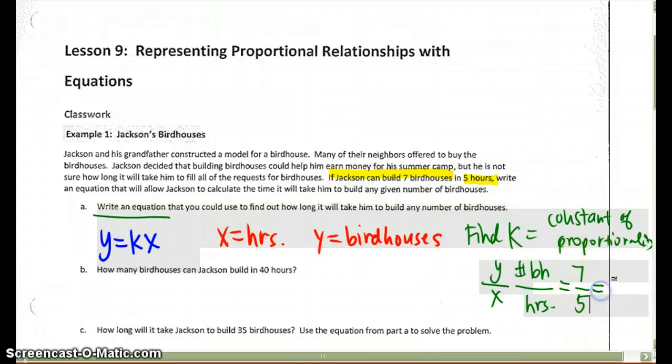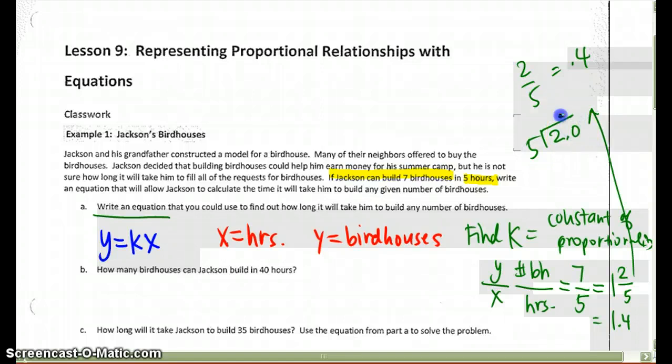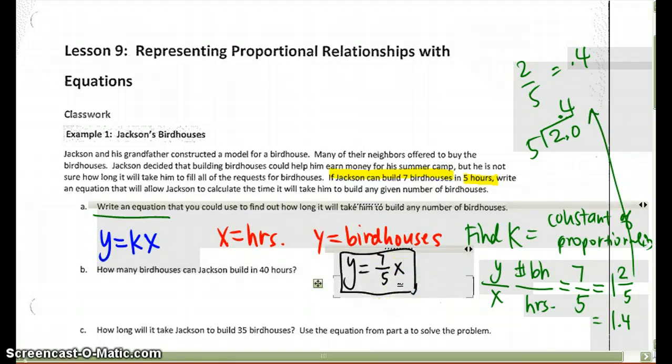I can change it to a mixed fraction, 1 and 2 fifths, or I can write it as a decimal and write 1.4. 2 fifths is the same as 1.4, because if I divide 2 with 5, I get .4. I'm going to write the equation y equals 7 fifths times x. I'm going to choose to keep it as the ratio that I've written where birdhouses is 7 and 5 is the hours, so that I can see that clearly.